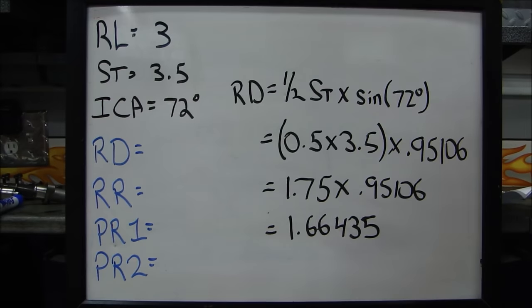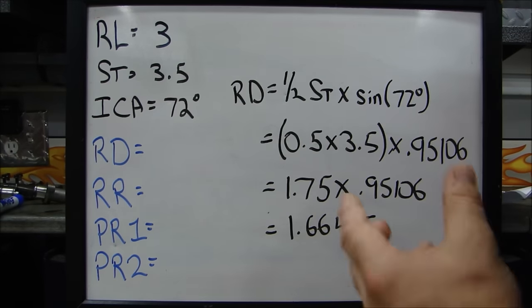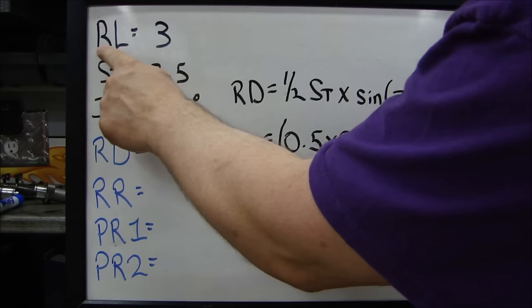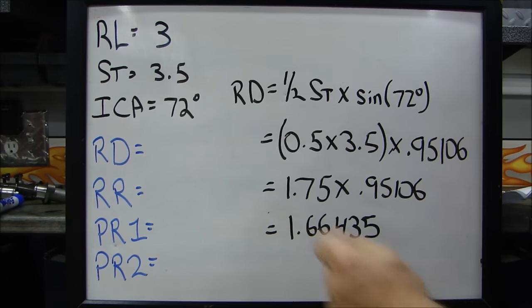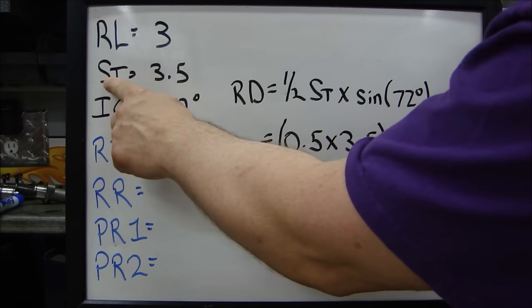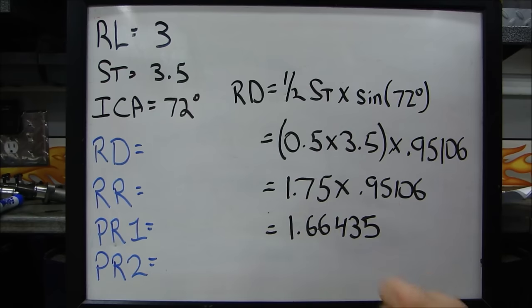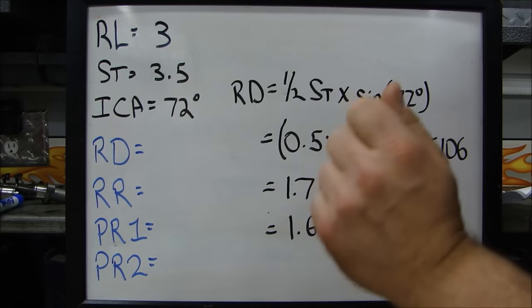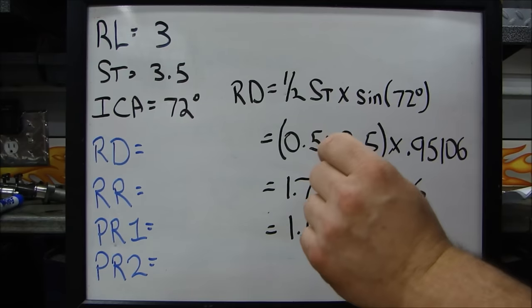Okay, you're going to have to figure out four numbers in order to figure out our dynamic compression. Now, there are some variables that you're already going to know. You're going to know your RL, that's your rod length, which is three inches. You're going to know your stroke in inches, which is 3.5 inches. And you're going to know the installed centerline angle on your camshaft.